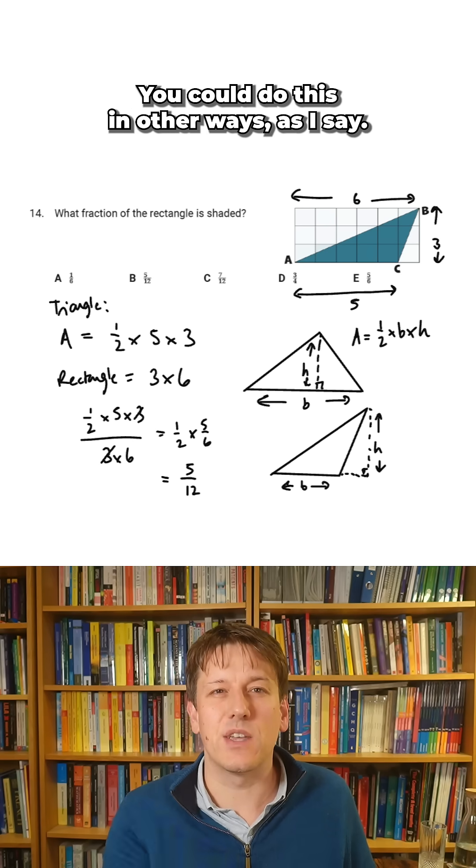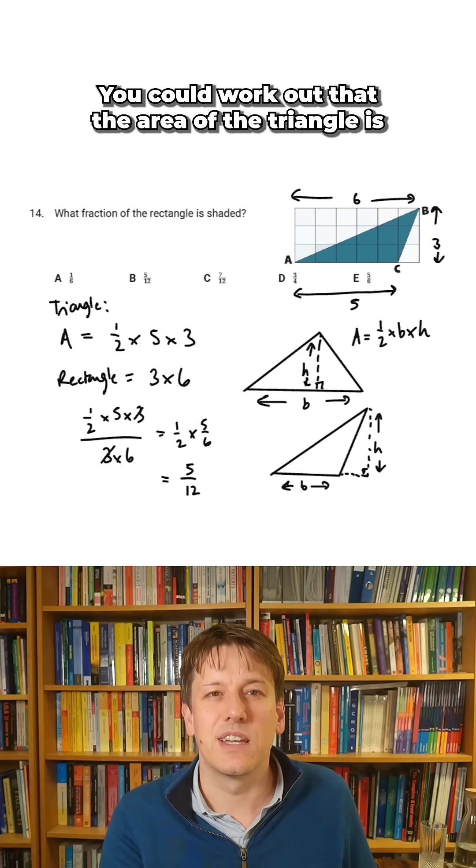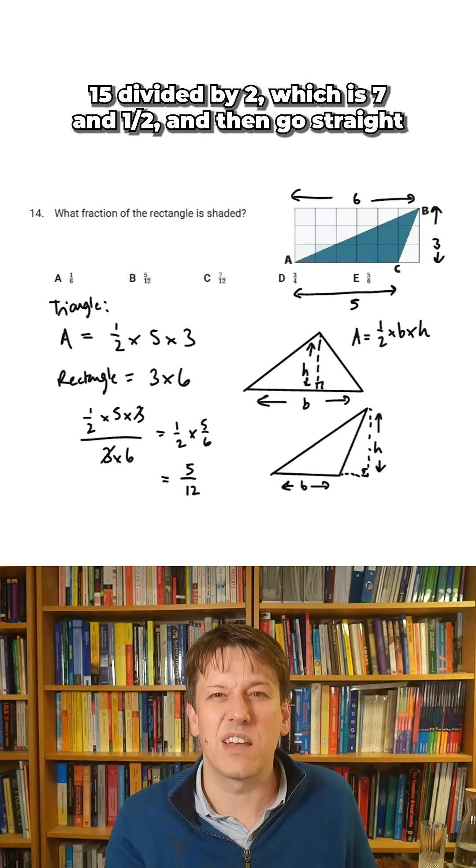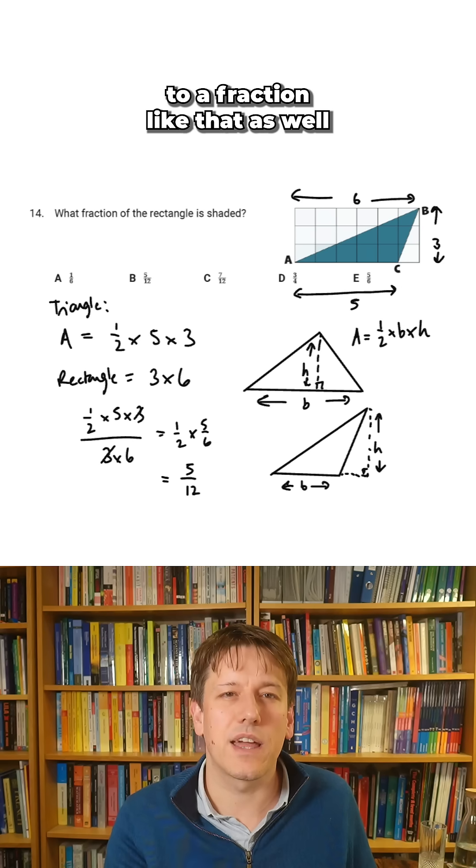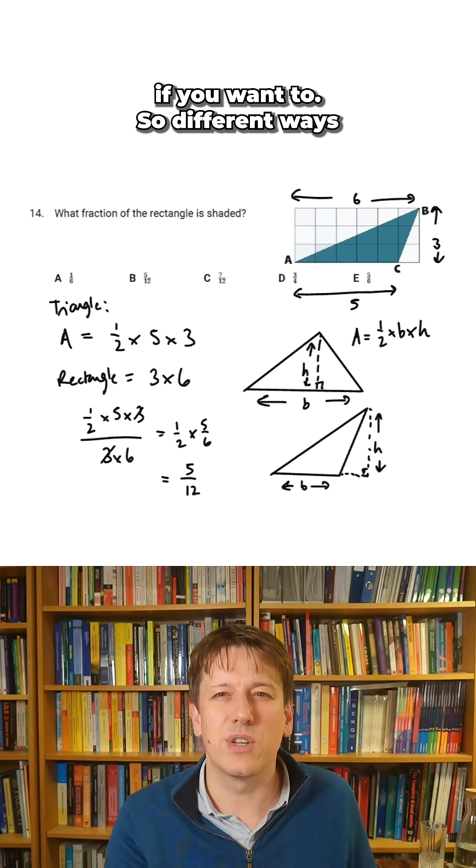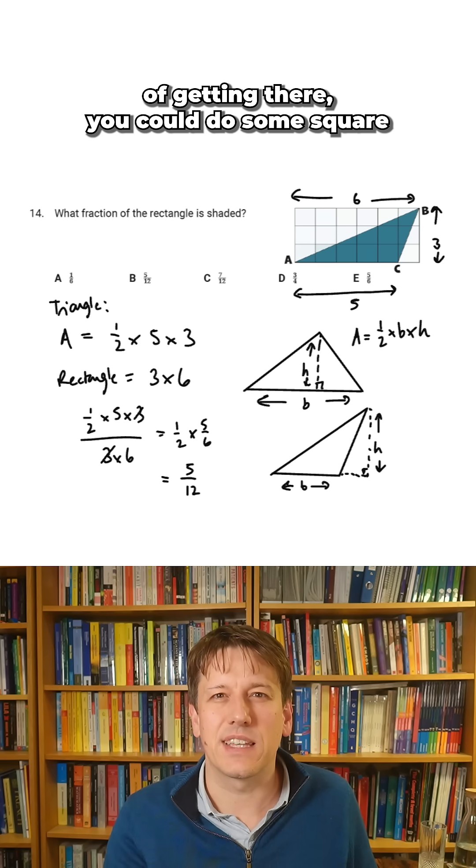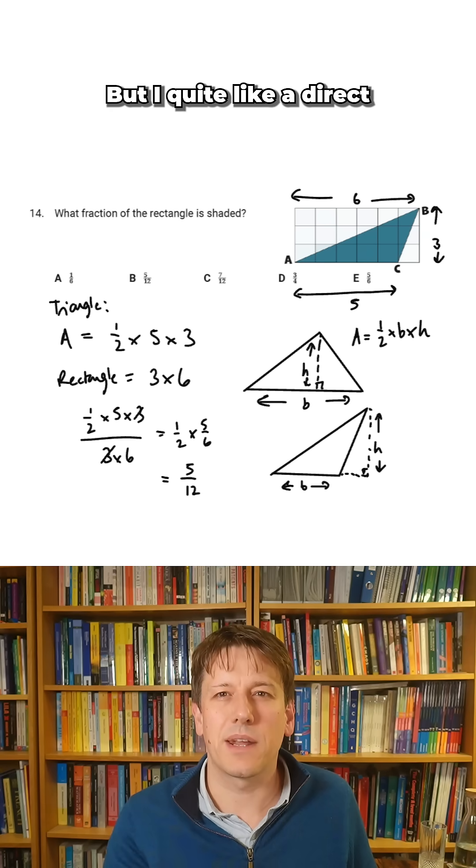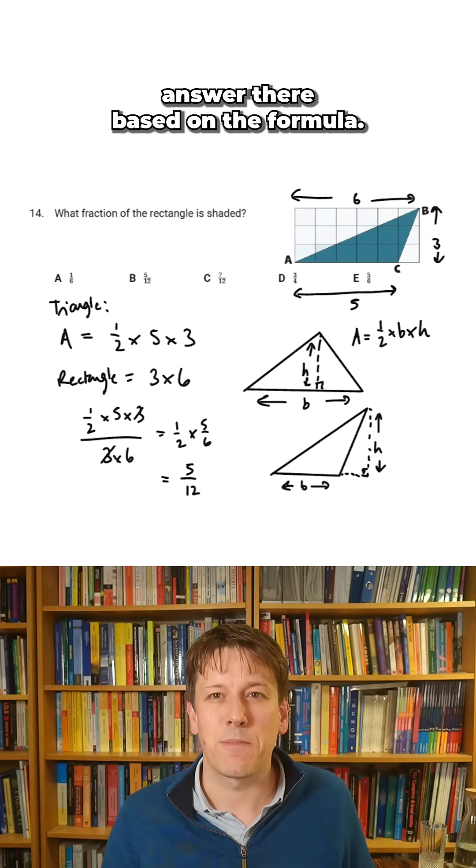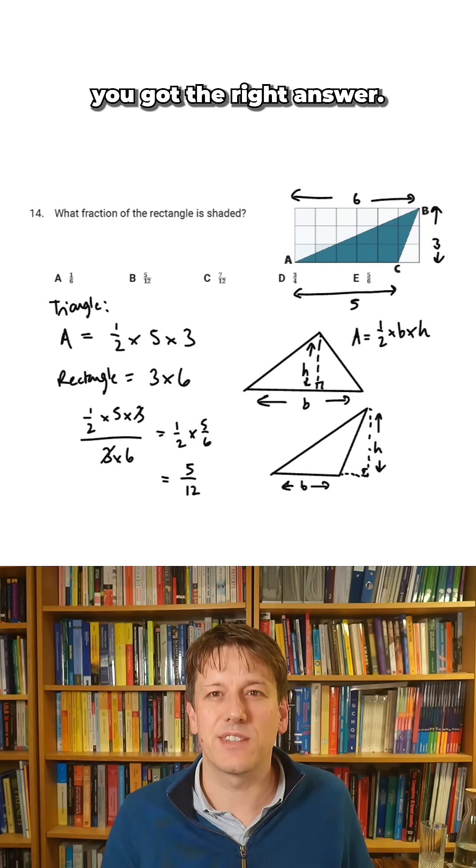You could do this in other ways. As I say, you could work out that the area of the triangle is 15 divided by two, which is seven and a half, and then go straight to a fraction like that as well. If you want to, so different ways of getting there, you could do some square counting in different ways as well. But I quite like a direct answer there based on the formula. So however you've done it, well done if you got the right answer.